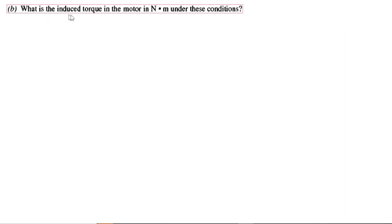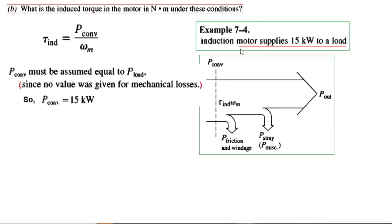The second part: what is the induced torque in the motor in Newton-meters under these conditions? The formula for induced torque is τ_induced = P_converted / ω_m. The power supplied is 15 kilowatt to the load, so this is the output power. Since friction losses are not given, we assume P_converted equals P_load or P_out. So P_converted is assumed to be 15 kilowatt.